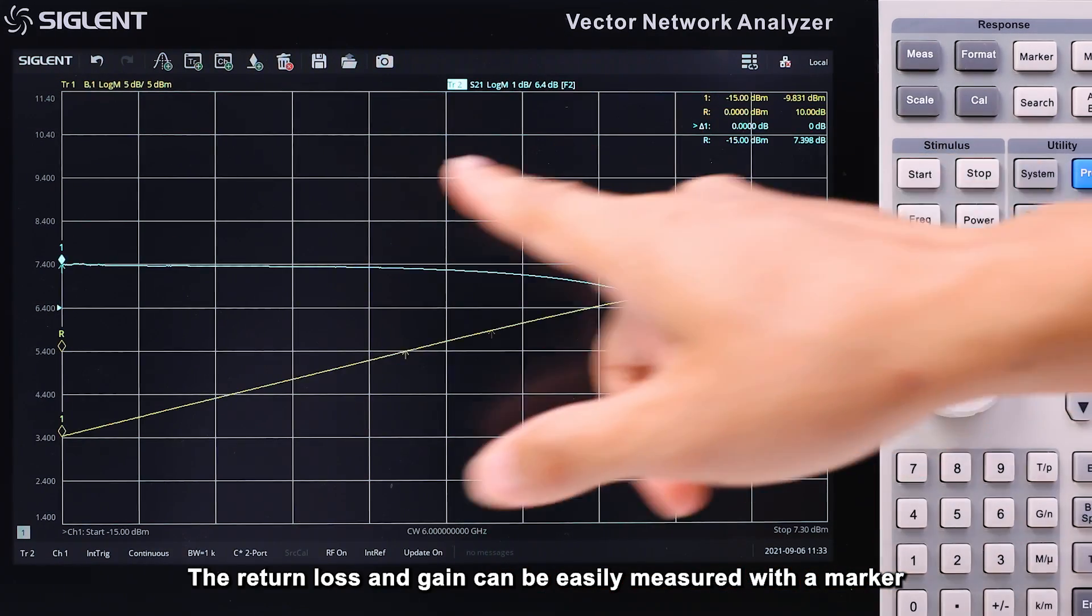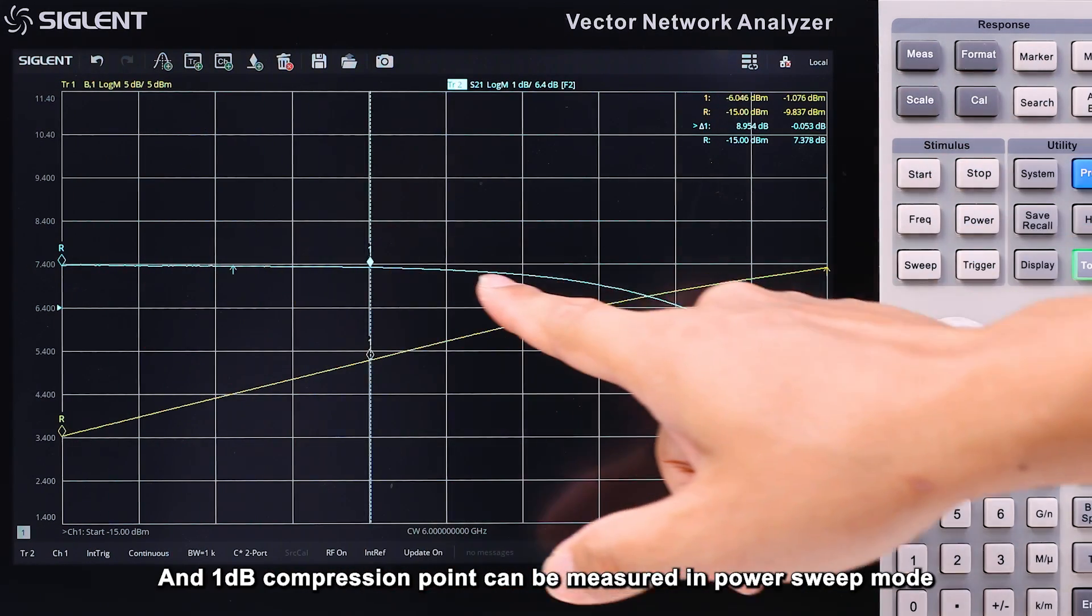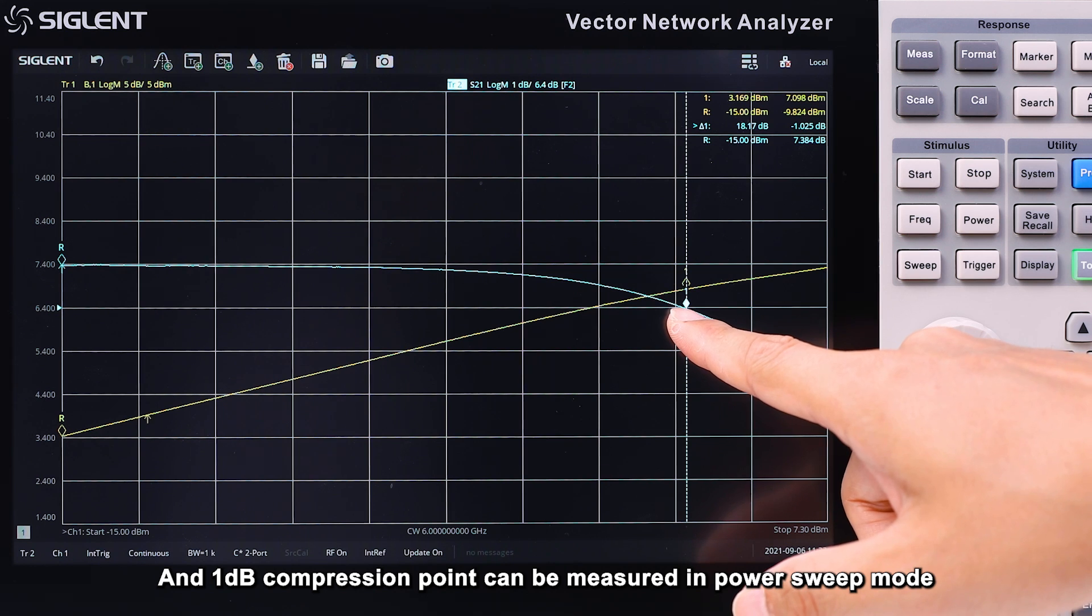The return loss and gain can be easily measured with a marker, and the 1dB compression point can be measured in power sweep mode.